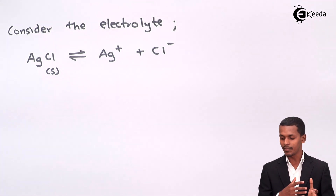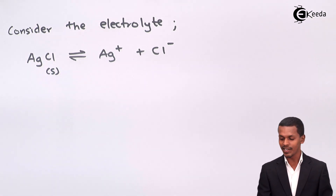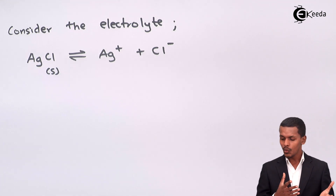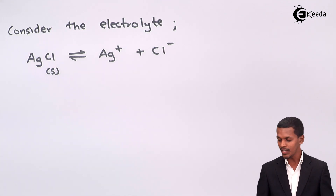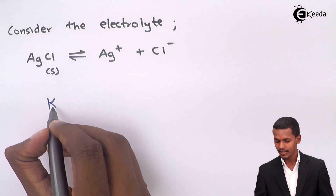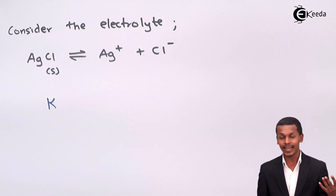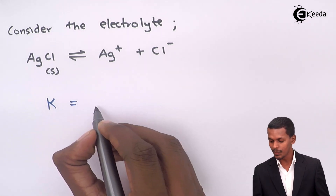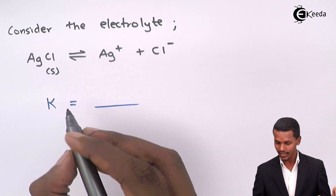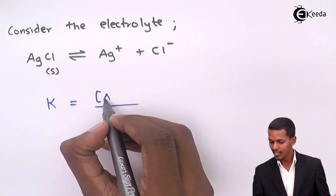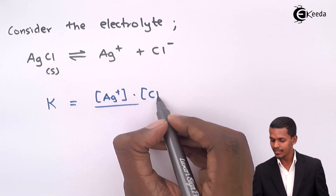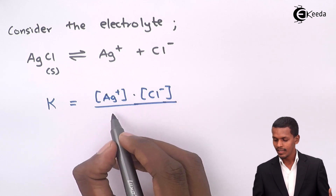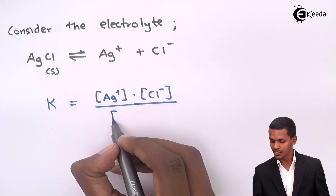After dissociating, AgCl gives Ag⁺ along with Cl⁻. According to the law of mass action, we can calculate the equilibrium constant K, which is the ratio of the products — that is, the concentration of Ag⁺ along with the concentration of Cl⁻ — divided by the concentration of AgCl.